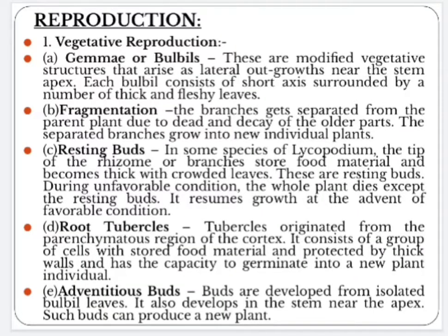In some species of Lycopodium, the tip of the rhizome or branches stores food material and becomes thick and covered with leaves; these are known as resting buds. During unfavorable conditions, the whole plant dies except the resting buds, which resume growth at the advent of favorable conditions to produce a new individual. Root tubercles originate from the parenchymatous region of the cortex and consist of a group of cells with stored food material protected by thick walls, capable of germinating into a new plant. Adventitious buds are developed from isolated bulby leaves and also develop in the stem near the apex, and such buds can produce a new plant.